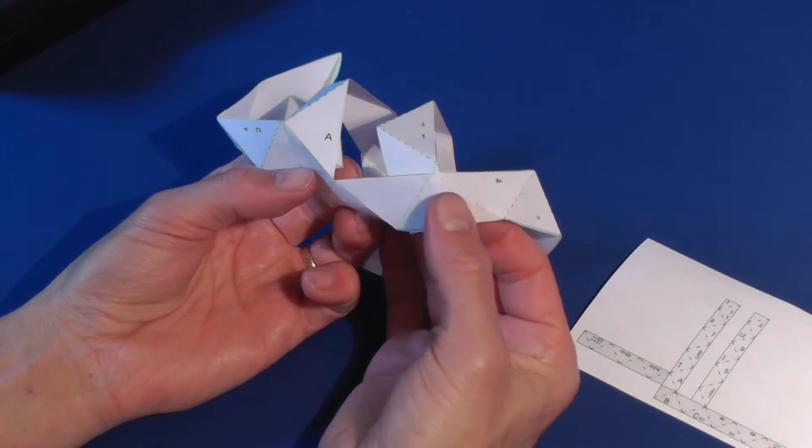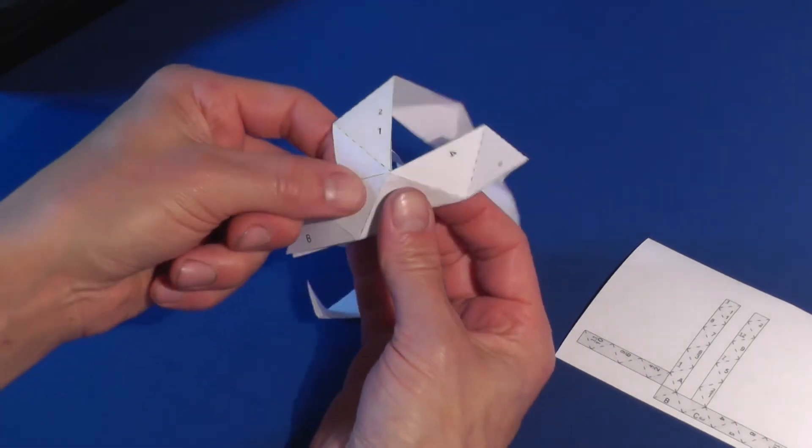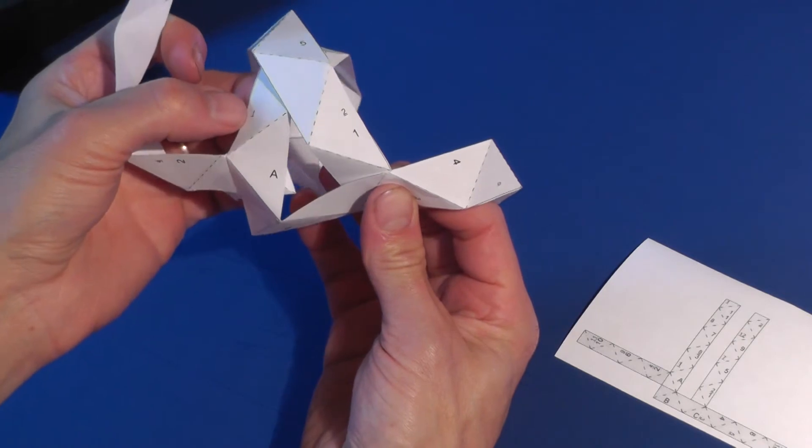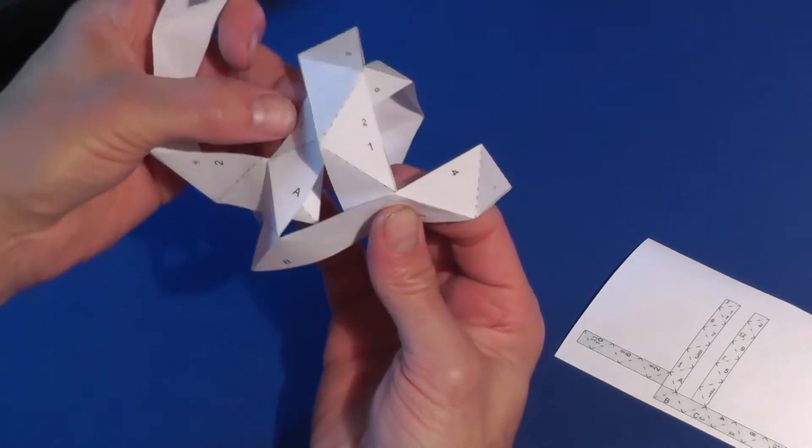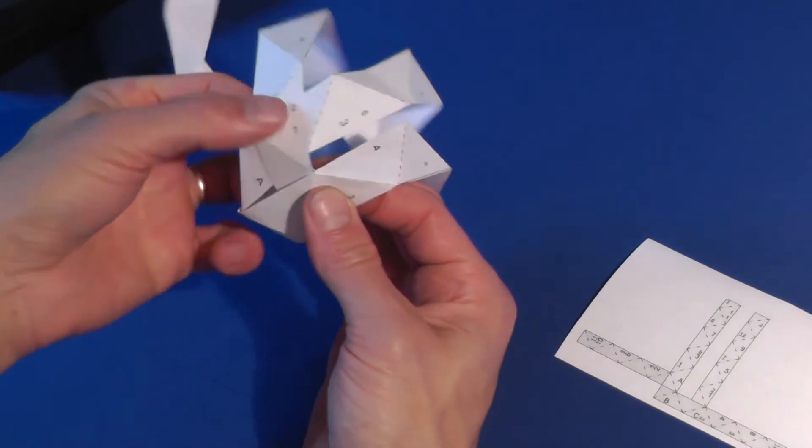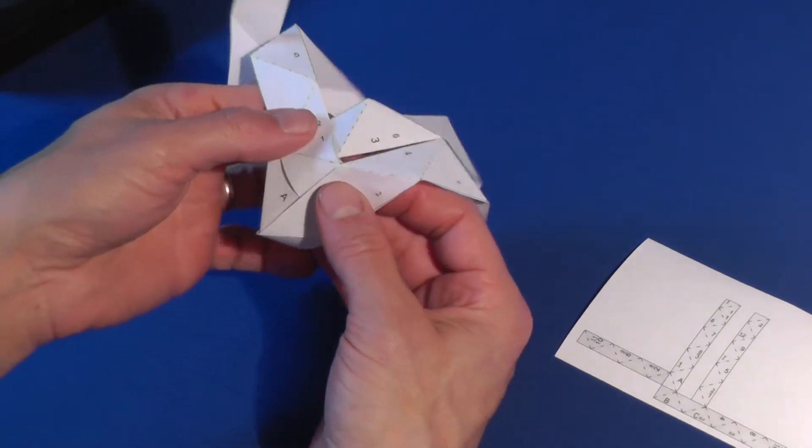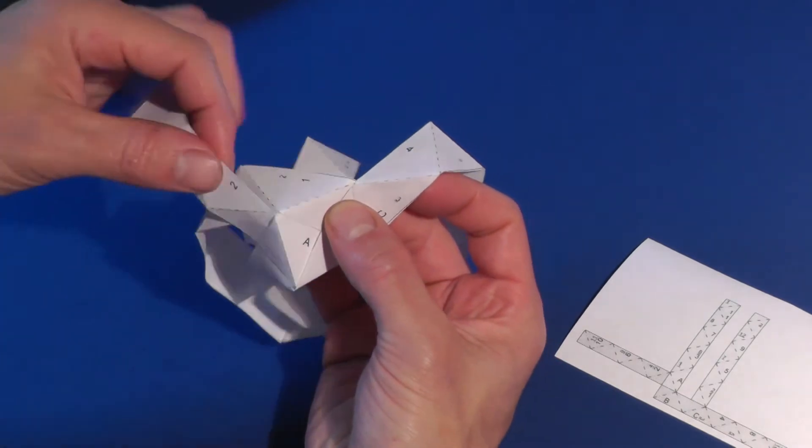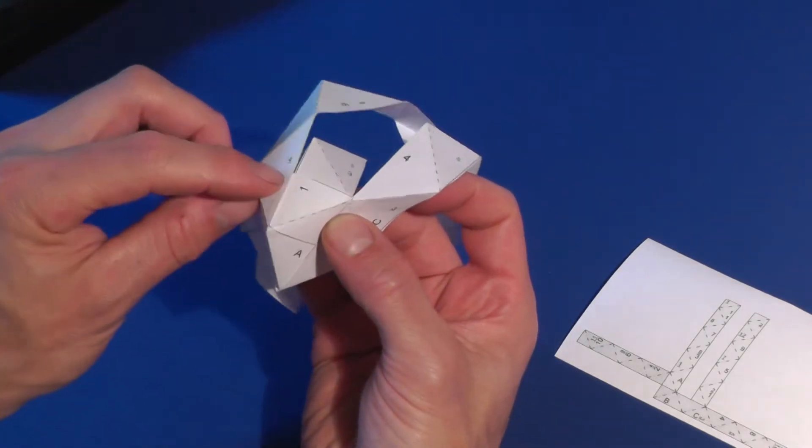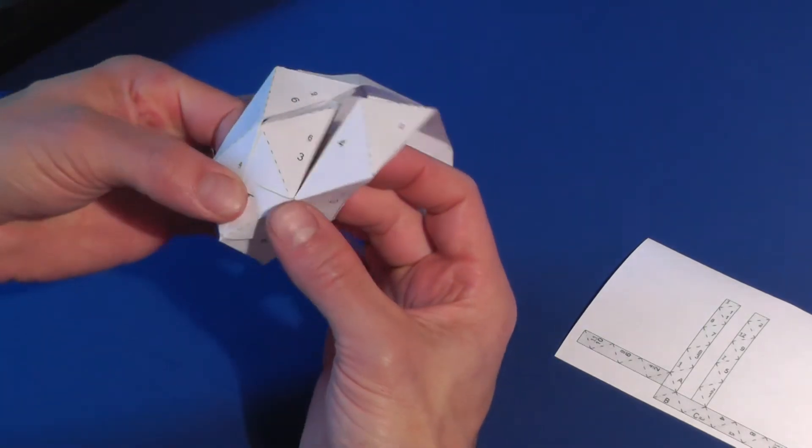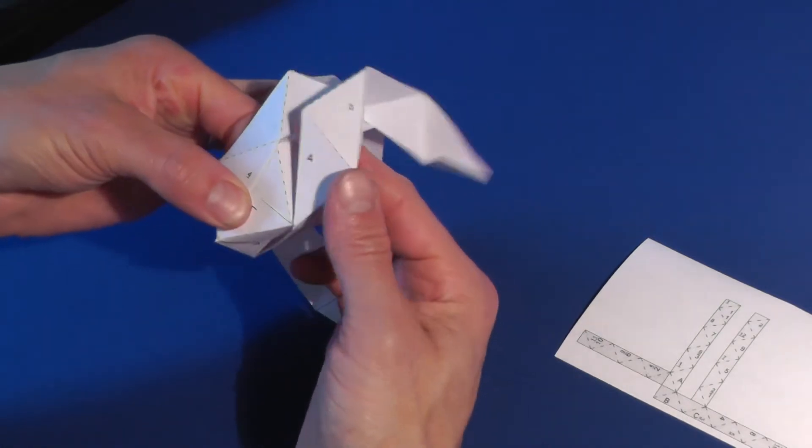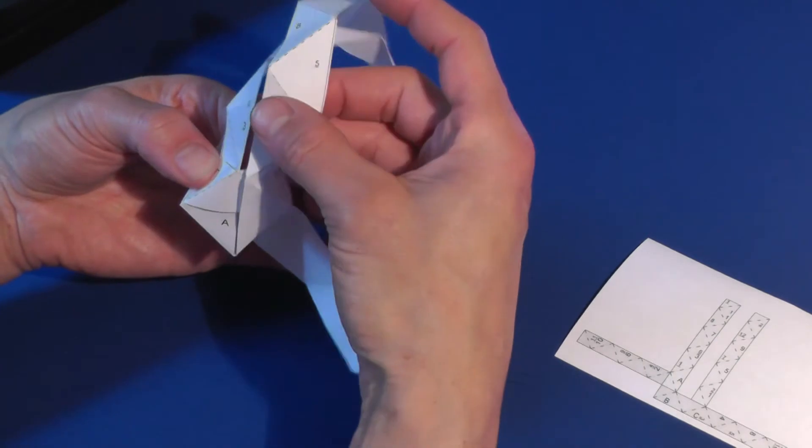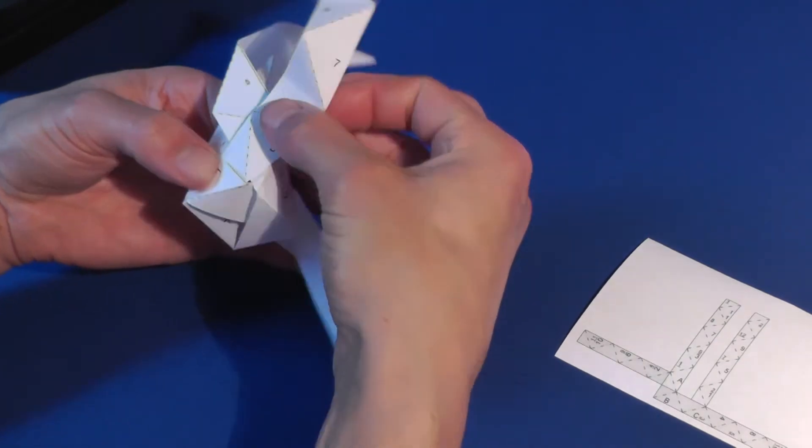Look for the two number ones and bring them together. Make sure the strip with the number one printed in the larger font is on top of the strip with the number one in the smaller font. Now look for the two number twos. Again, the larger number two goes on top of the smaller one. You might need to tuck one strip under the other to make this happen. Continue until you can tuck in the ends of the strip.